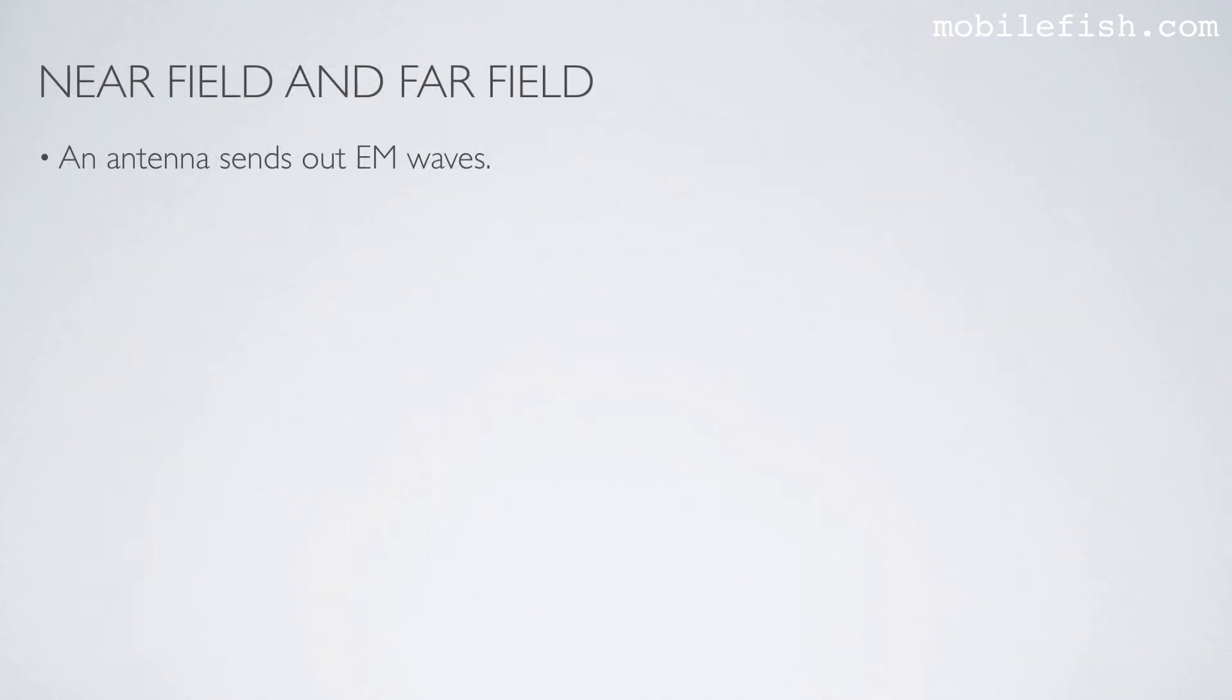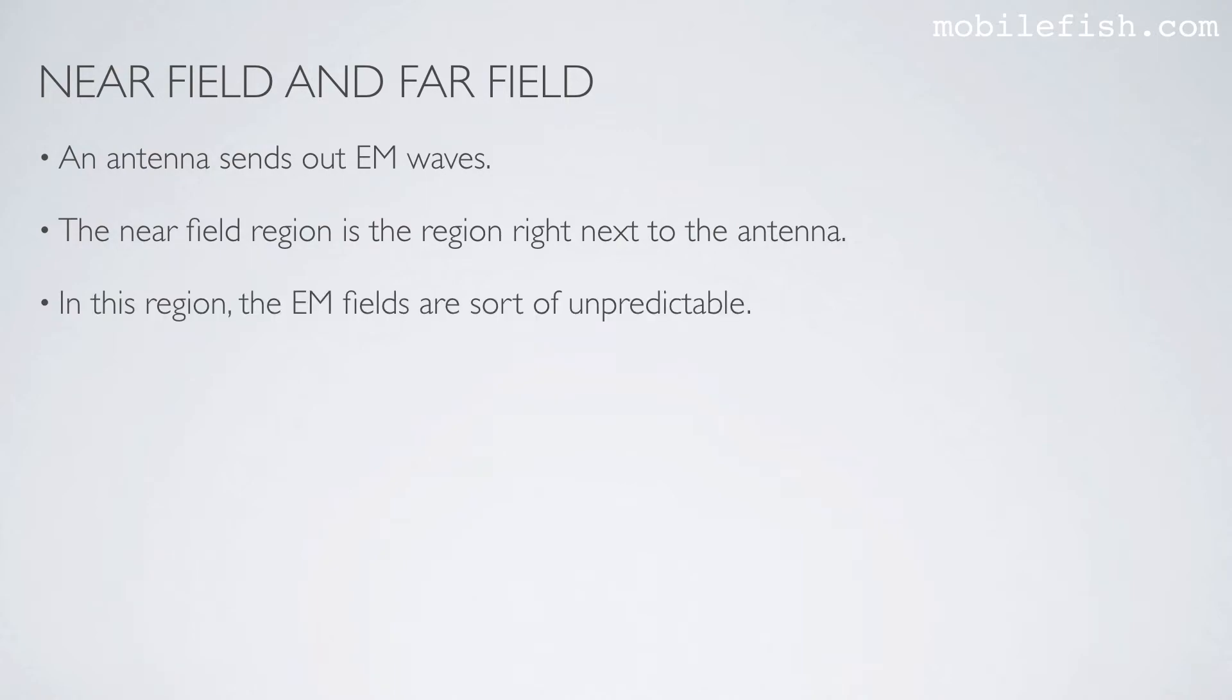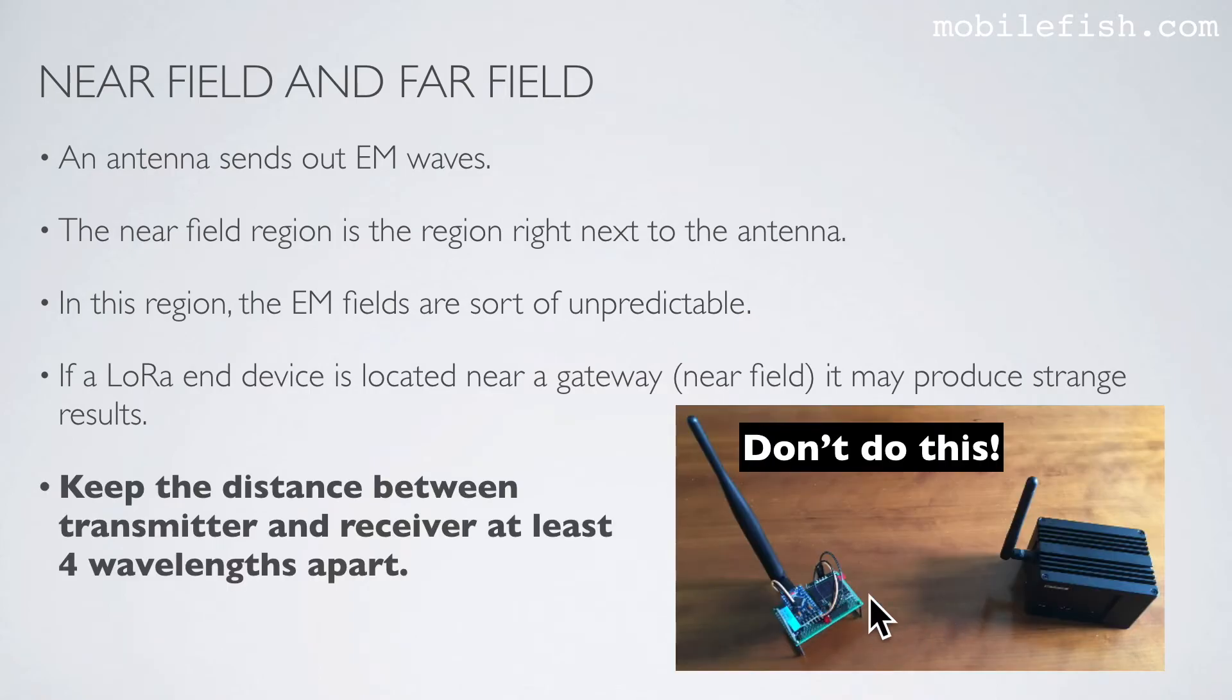An antenna sends out electromagnetic waves. The near-field region is the region right next to the antenna. In this region, the electromagnetic fields are sort of unpredictable. If a LoRaWAN device is located near a gateway, so within the near-field region, it may produce strange results. Therefore, keep the distance between transmitter and receiver at least 4 wavelengths apart.